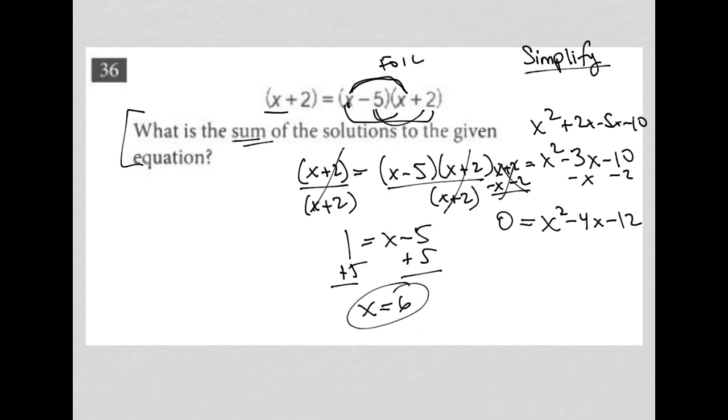From there, I'm going to factor this into x minus 6 and x plus 2. Why? Because negative 6 times positive 2 is negative 12, and negative 6 plus 2 is negative 4. So that's how that works. I have 0 equals that.